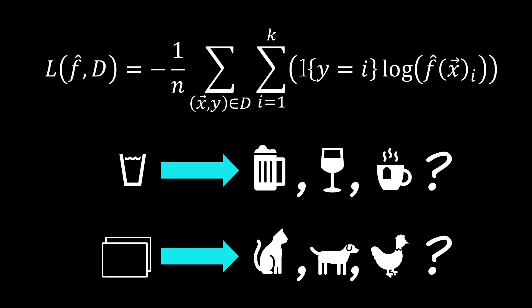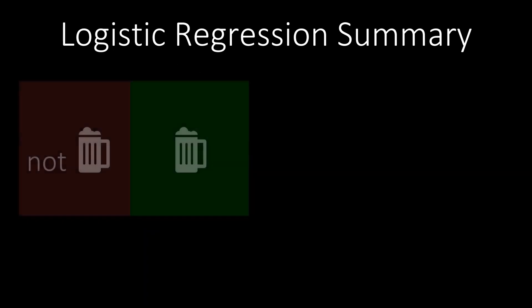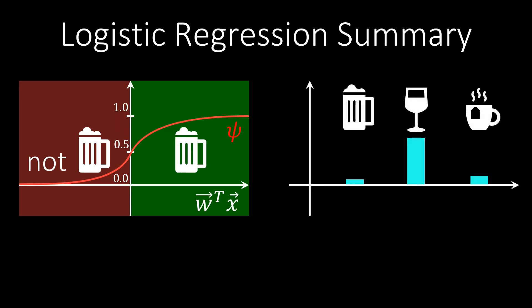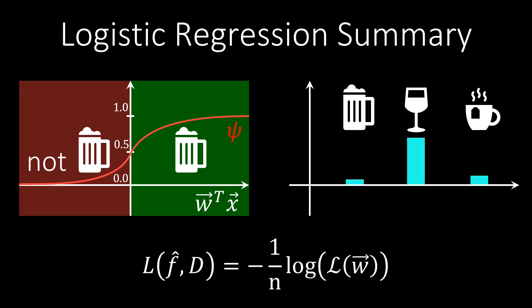Let us summarize the main insights of this video. If we want our function approximator to make a binary decision, we can do so by squashing our output into the range 0 to 1. Similarly, if we wish to classify into multiple classes, we can use a softmax function to get a distribution over the options. This gives us a probabilistic interpretation from which we can derive the negative log likelihood loss. The derived loss function can then be used in gradient descent to update our model weights.